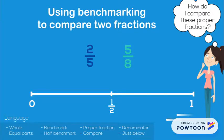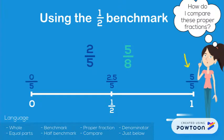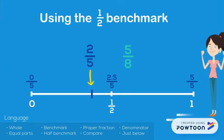When we're using the half benchmark with 2/5, we first find half of the denominator, which would be 2.5/5, because 5/5 is a whole and half of 5 equal parts is 2.5 equal parts. Now we can see that 2/5 is just below a half.